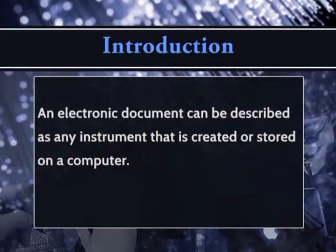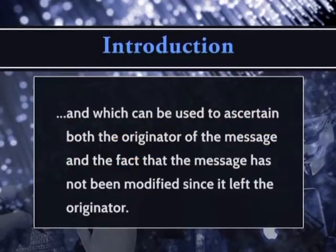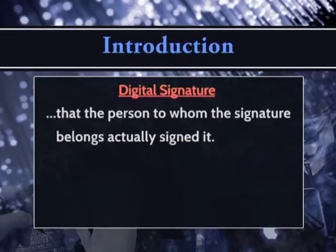An electronic document can be described as any instrument that is created or stored on a computer. These include electronic mail, letters, memos, contracts, and images. A digital signature is a data item which accompanies an electronic document and which can be used to ascertain both the originator of the message and the fact that the message has not been modified since it left the originator. It is a form of authentication method used to authenticate the identity of the sender by convincing the recipient that the person to whom the signature belongs actually signed it.